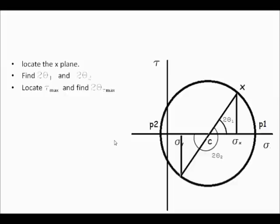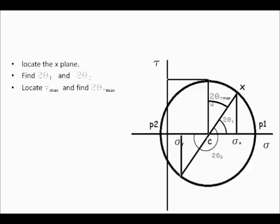The maximum shear stress is the maximum point on the y-axis — this point is the maximum shear force that will be acting, and the angle is 2-theta-max. Here, 2-theta-max would be negative because we have taken clockwise to be positive — this goes anti-clockwise with respect to x. So 2-theta1 is positive and 2-theta-tau-max is negative. Alternatively, we could take the whole angle in order to be positive.